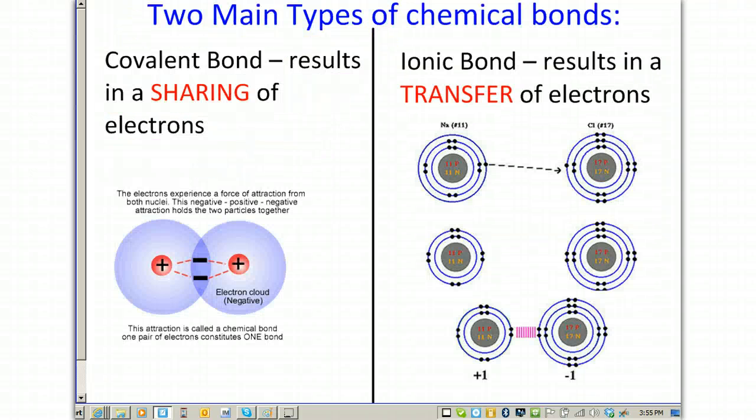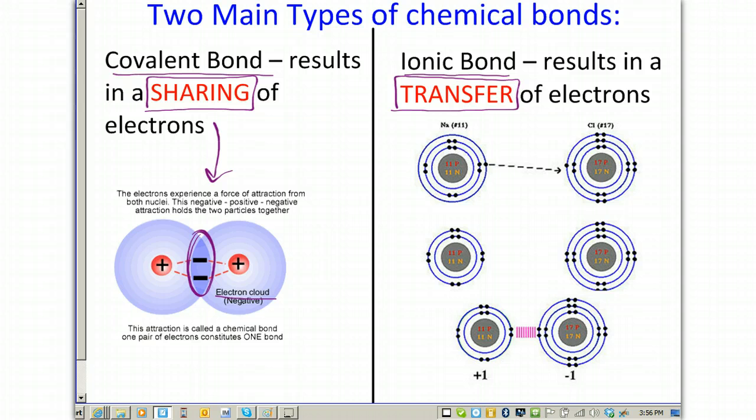There are two main types of chemical bonds. There's a covalent bond, which is a sharing of electrons. Notice in the diagram below, we have two atoms where their electron clouds overlap each other. And so, they're sharing the electrons in the overlap of the clouds. On the right side, we have an ionic bond, which is the result of a transfer of electrons, which is very different.